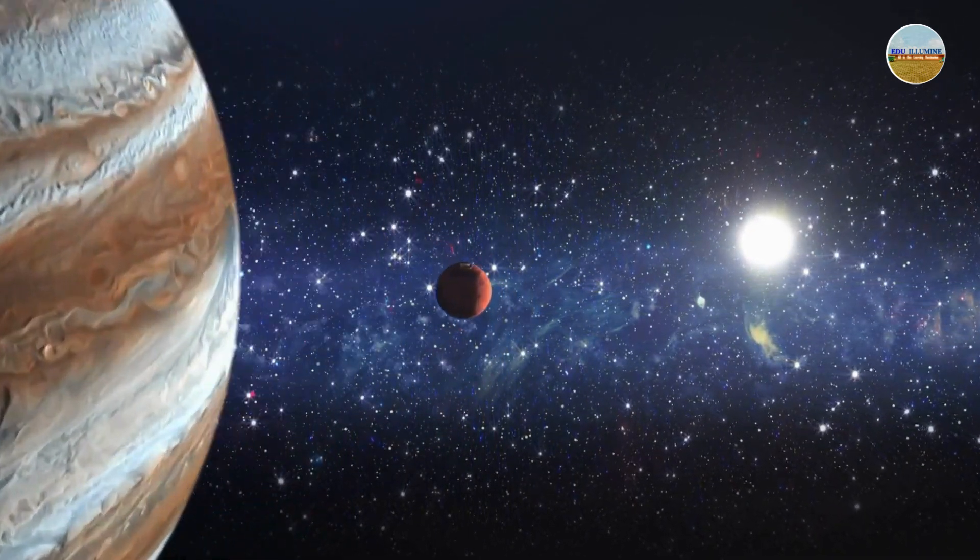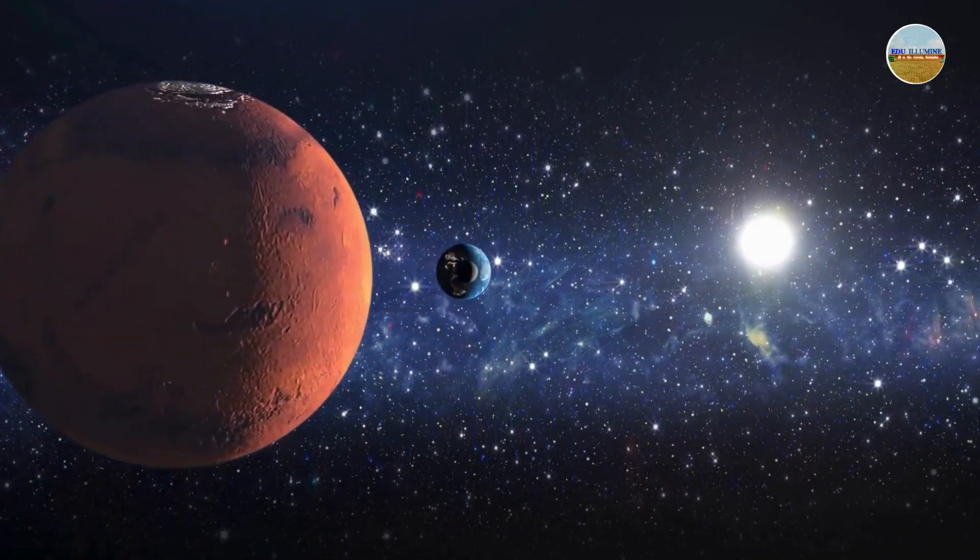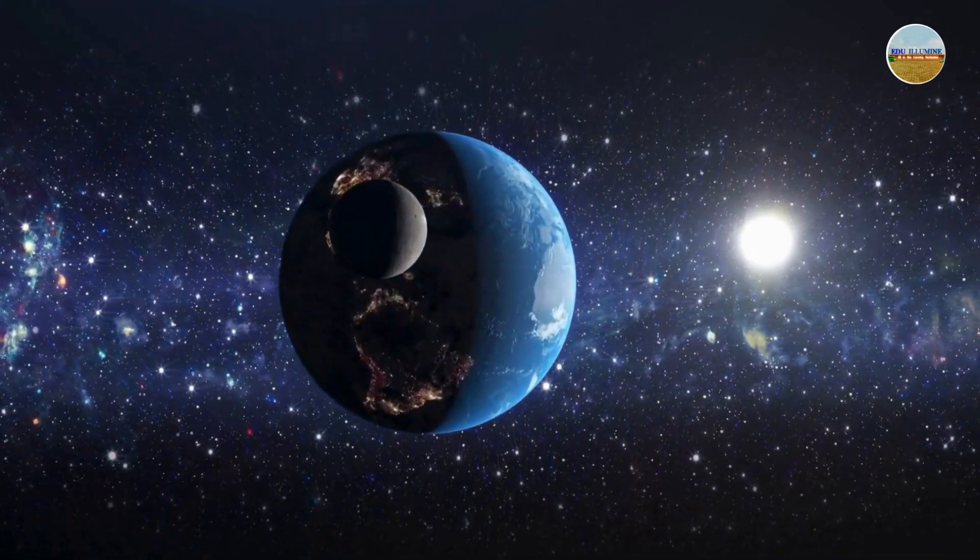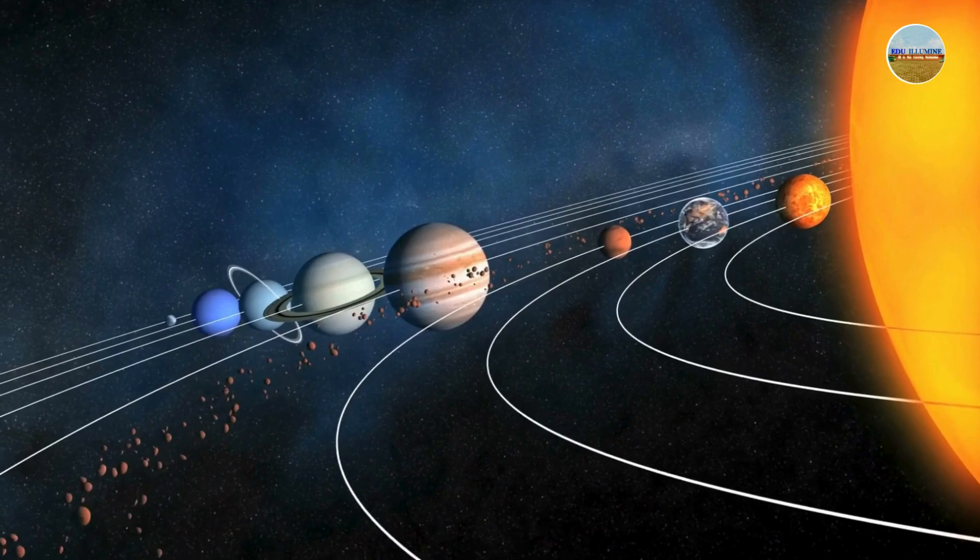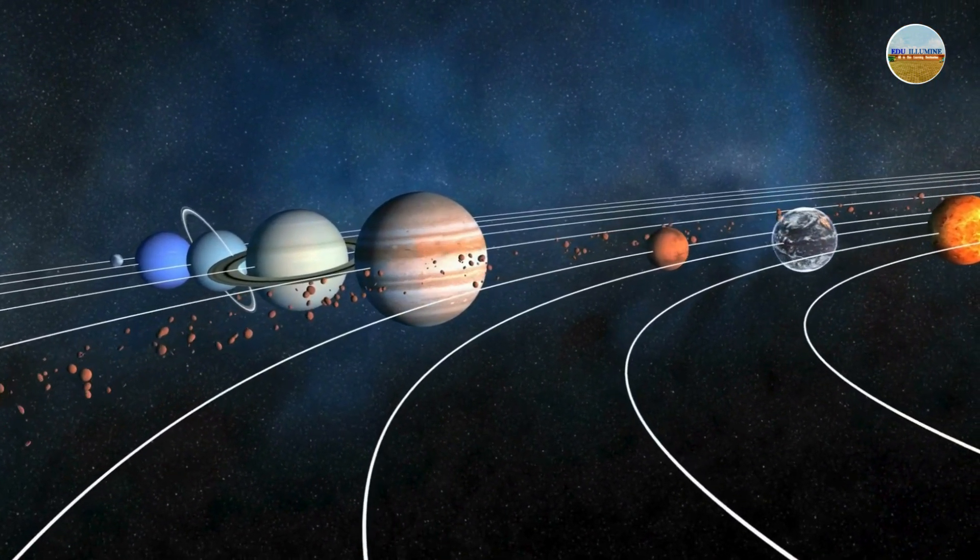Moons, comets, and even space rocks called asteroids joined in the fun. So that's how our solar system was born. A spinning cloud made everything. Pretty cool, right?